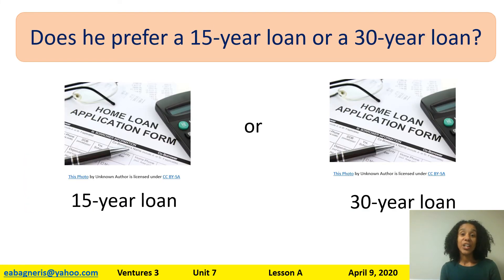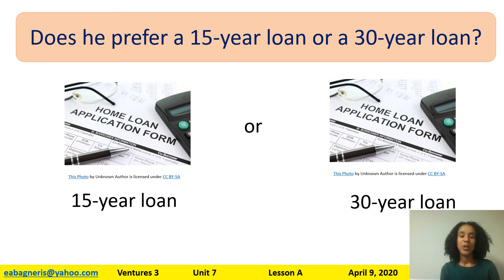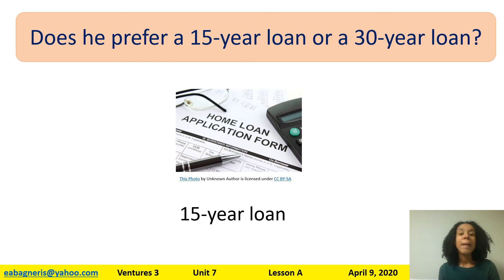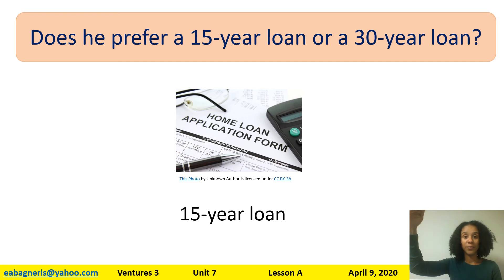Since the man has good credit, the lender has agreed to give him a home loan. The lender asks: do you prefer a 15-year or a 30-year home loan? Remember, to prefer something means to like it more. The man prefers a 15-year home loan. He chooses the 15-year option because he can pay it off in less time. He will have a higher monthly bill, but he will only have the loan for 15 years instead of 30 years.